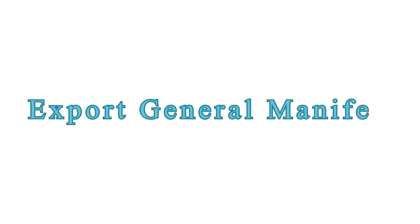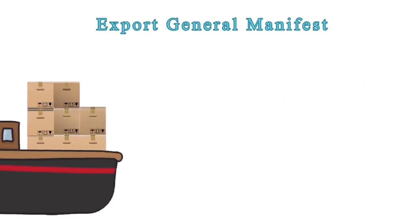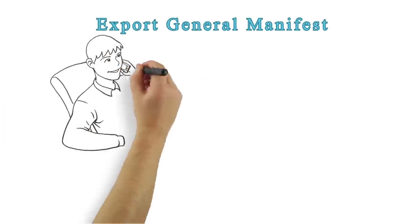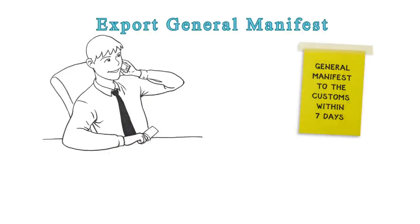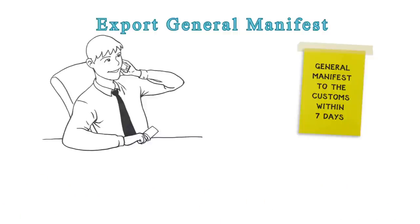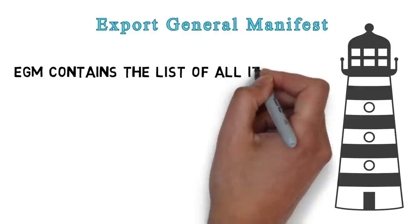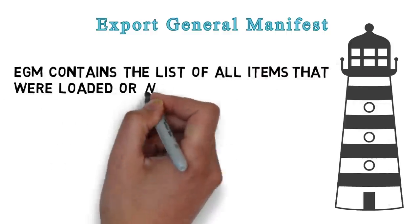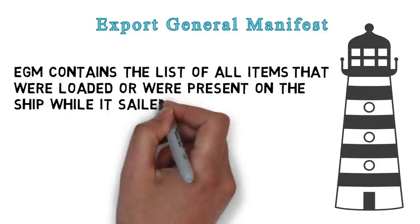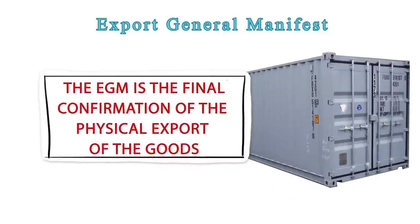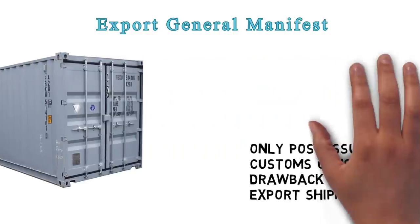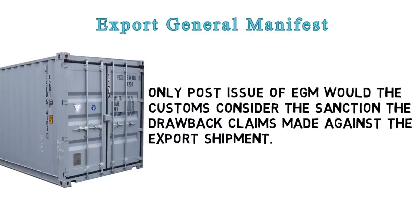Export General Manifest (EGM): Once a ship sails away, shipping lines or their agents furnish the Export General Manifest to customs within seven days from the date of sailing of the vessel. The EGM contains the list of all items that were loaded or were present on the ship while it sailed from the port. The EGM is the final confirmation of the physical export of the goods, and only post-issue of EGM will customs consider the sanction of drawback claims made against the export shipment.